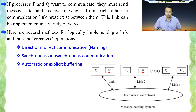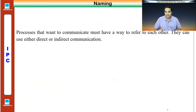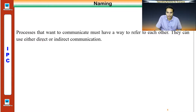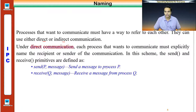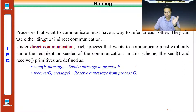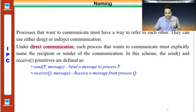First, let's look at naming. Processes that wish to communicate must have a way to refer to each other — I should be able to identify you. With direct communication, each process that wishes to communicate must explicitly name the recipient or sender. The send primitive is: send(P, message) — sending a message to process P. The receive primitive is: receive(Q, message) — receiving from process Q.